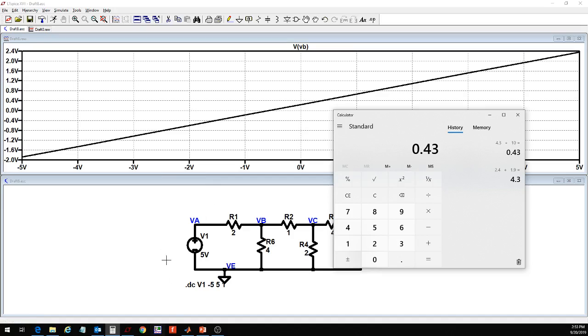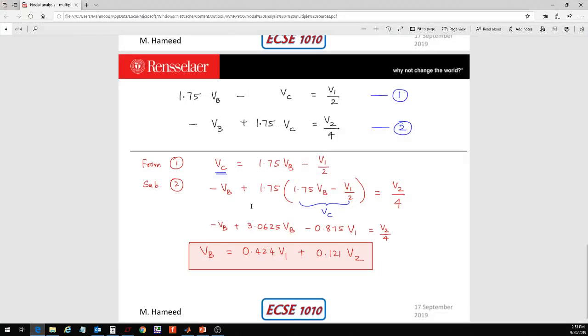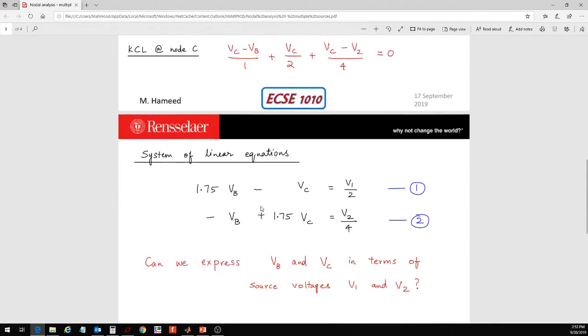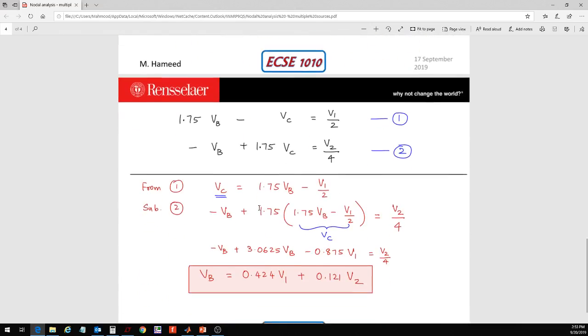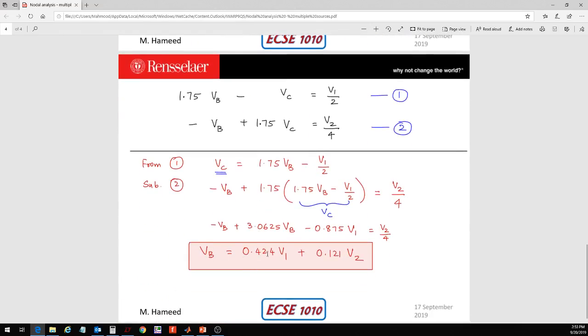And just so that I have something to validate this result, I'm going to look at what I had derived in the other video for the same circuit. At the end of this, I got a relationship for VB which I expressed using V1 and V2, and the slope with respect to V1 was in fact 0.424, very close to 0.43.